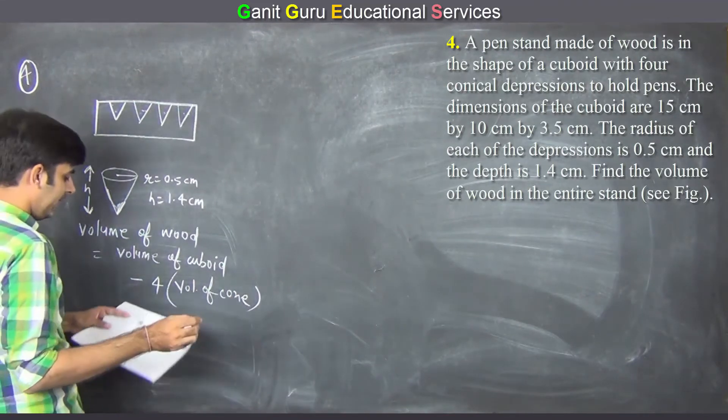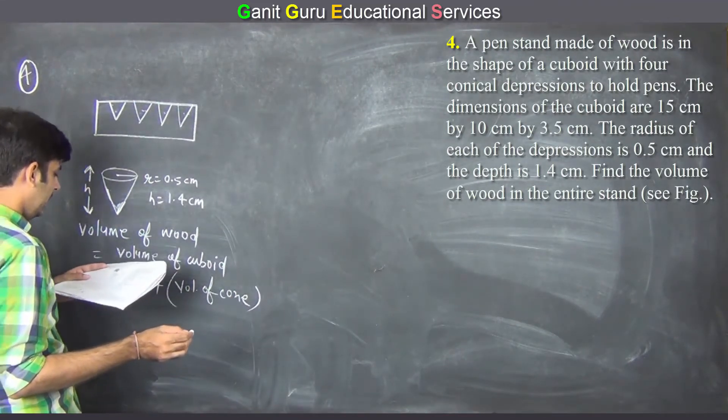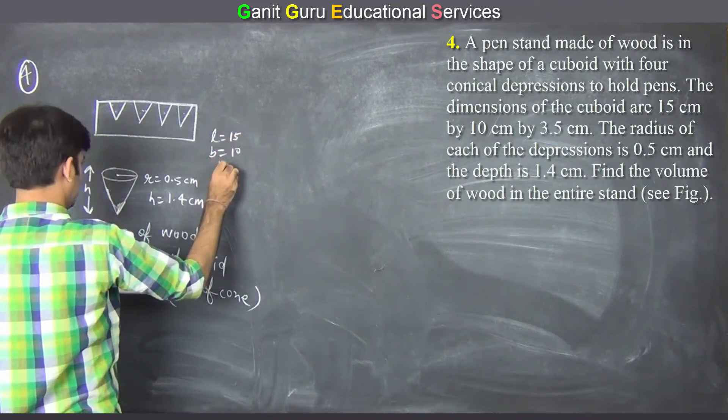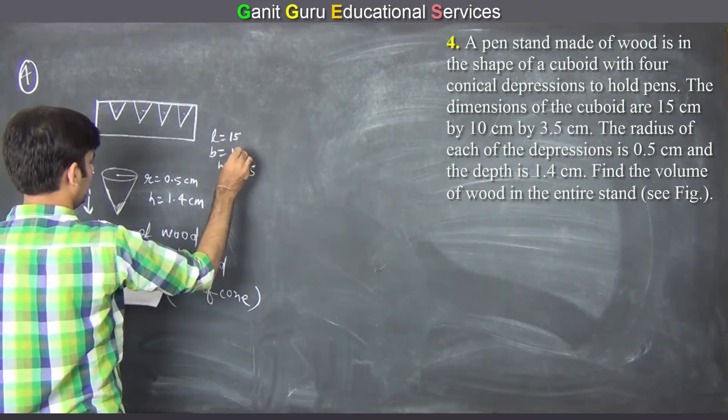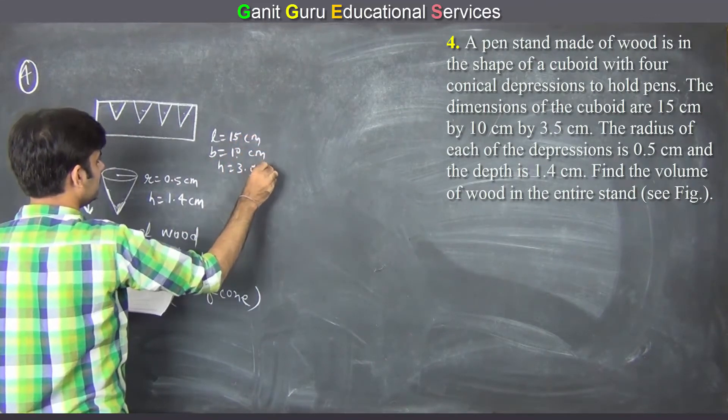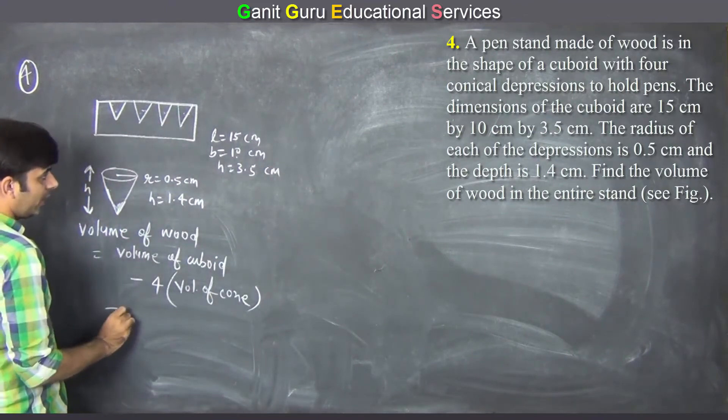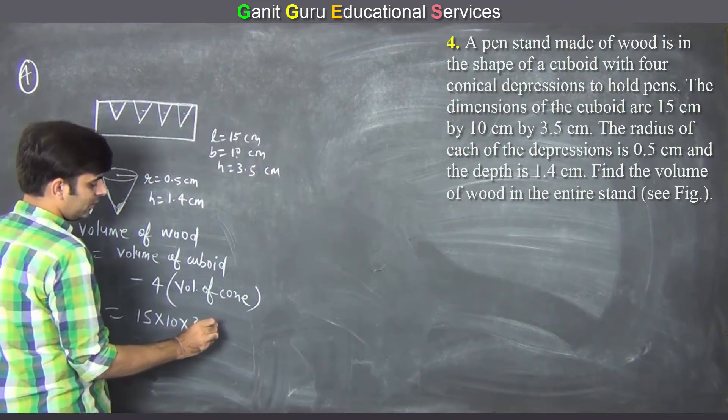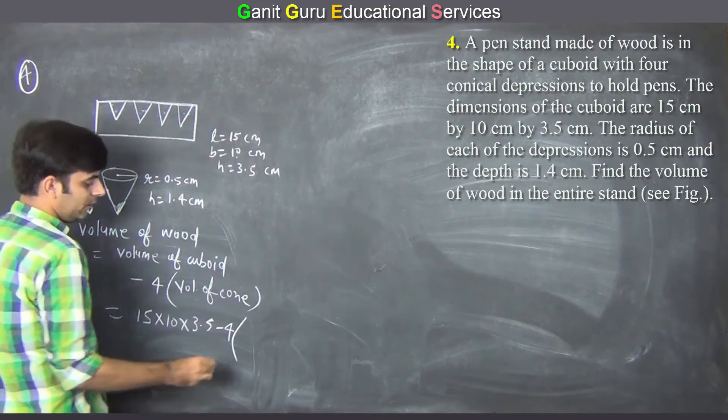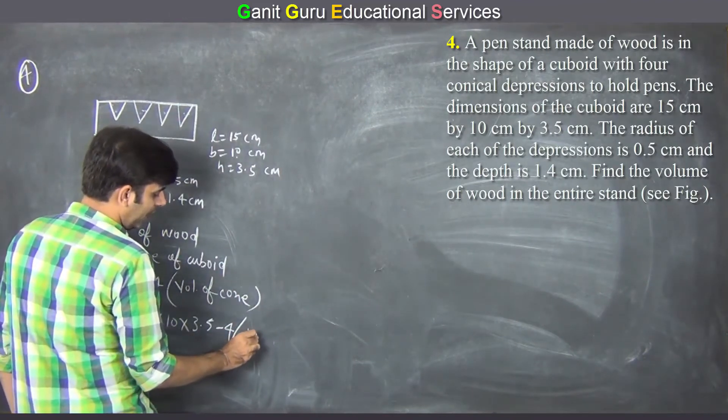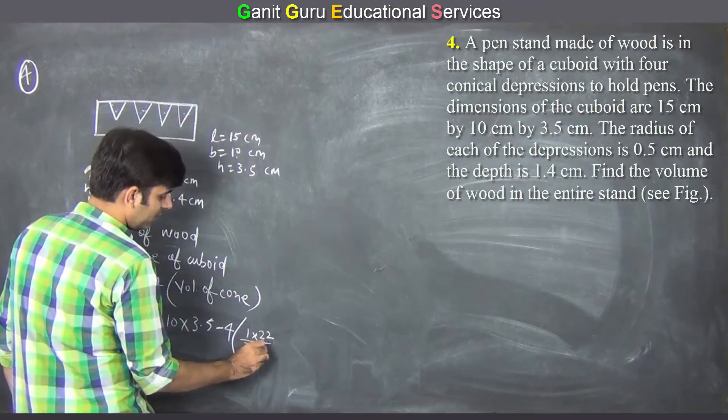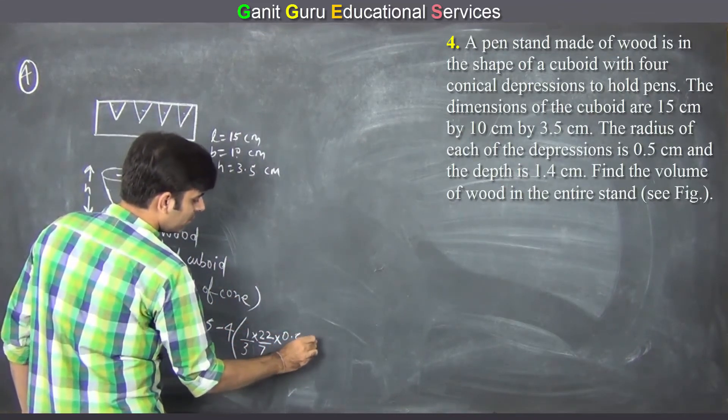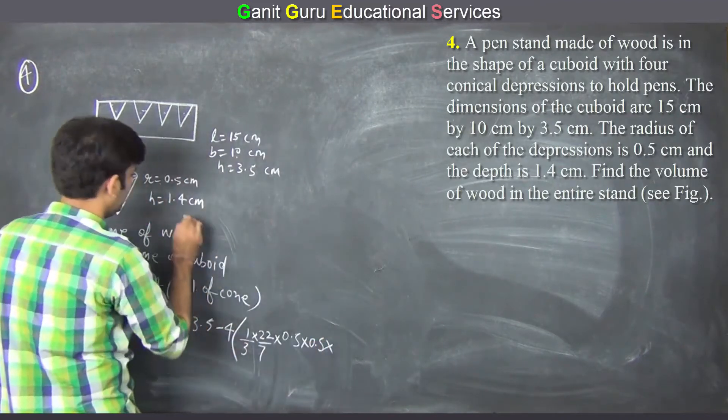Volume of cuboid is length into breadth into height. Given dimensions of cuboid, volume equals length into breadth into height minus 4 times volume of cone, 1 by 3 by 22 by 7, r square, 0.5 square into h 1.4.